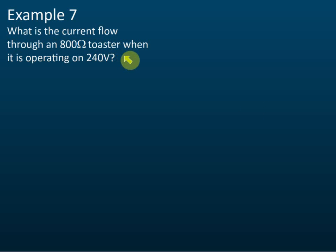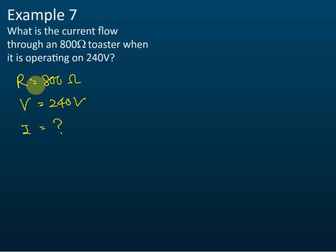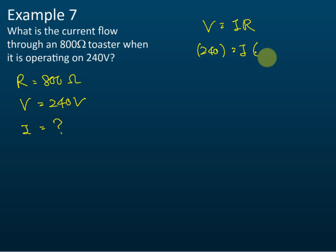Let's see this example. What is the current flowing through an 800-ohm toaster when it is operating at 240 volts? First, list down the information: resistance R equals 800 ohms, potential difference V equals 240 volts, and we need to find the current I. Using the formula V equals IR, with V = 240 and R = 800, I equals 0.3 amperes.